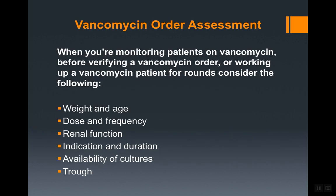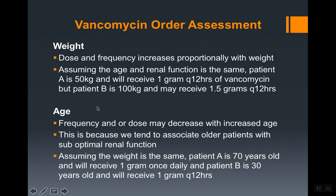When monitoring patients on vancomycin — or before verifying a vancomycin order — consider the following factors. First, weight: dose and frequency increase proportionally with weight. For example, assuming the same age and renal function, patient A at 50 kg may receive 1 gram every 12 hours, while patient B at 100 kg may receive 1.5 grams every 12 hours.